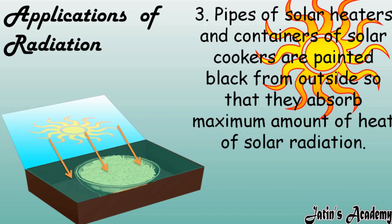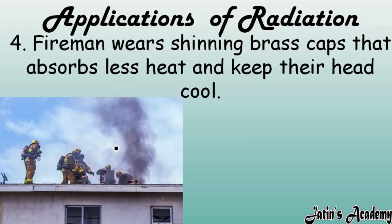Third application: pipes and containers of solar cookers are painted black from outside. Solar cookers work on sunlight, so black color helps absorb more solar radiation into the cooker, allowing food inside to cook properly. Fourth application: firemen wear shiny brass caps because the shiny surface reflects heat radiation away from their heads, keeping them cool.